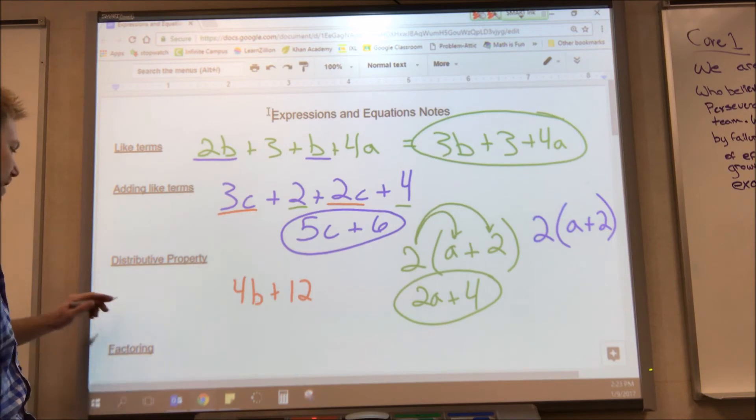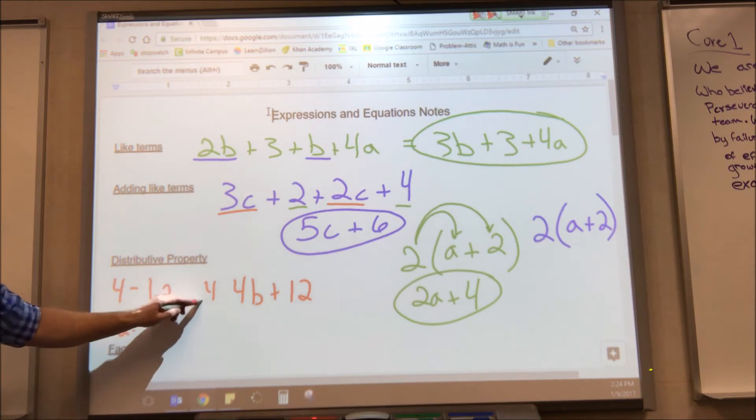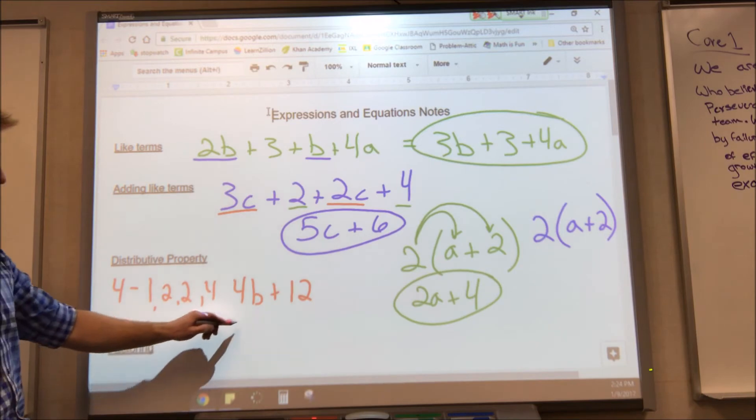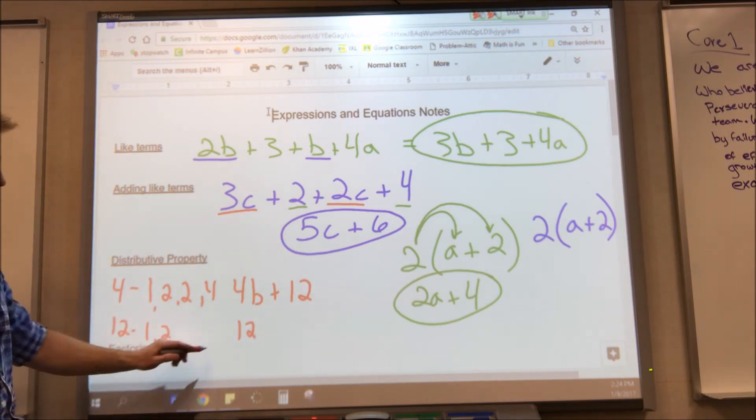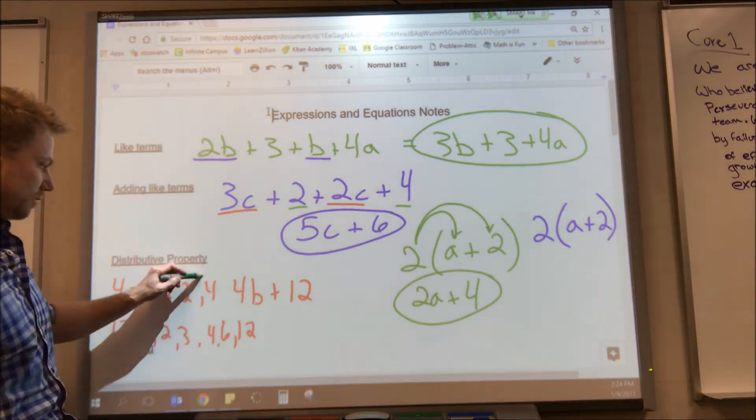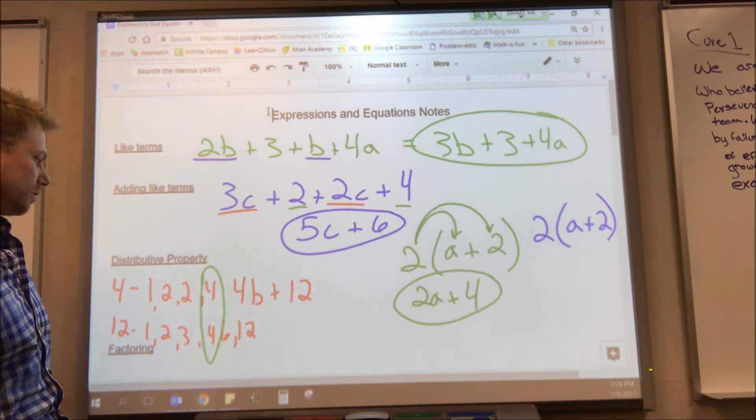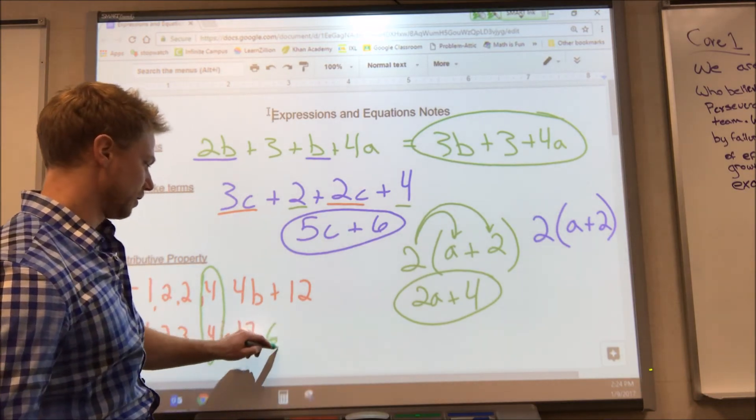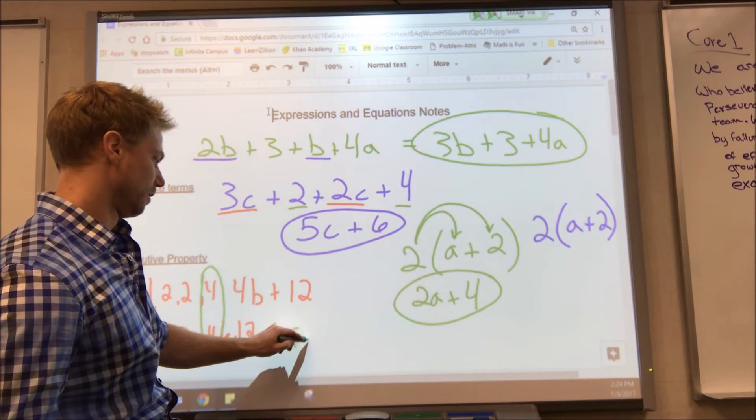So if I have 4 and 12, start listing factors. 1 goes into 4, 4 times. 2 goes into 4, 2 times. Since we've been in the middle, we're done. 1 goes into 12, 12 times. 2 goes into 12, 6 times. 3 goes into 12, 4 times. We've been in the middle again and we're done. Now we can see the biggest number in both of those is 4. So the greatest common factor, the GCF, is 4.